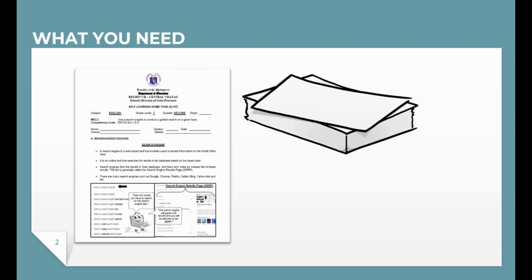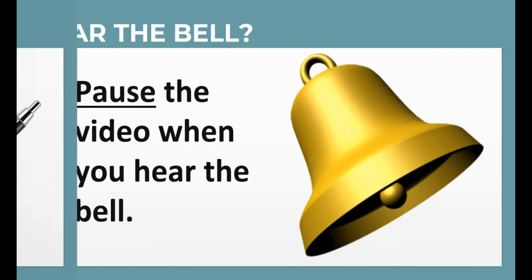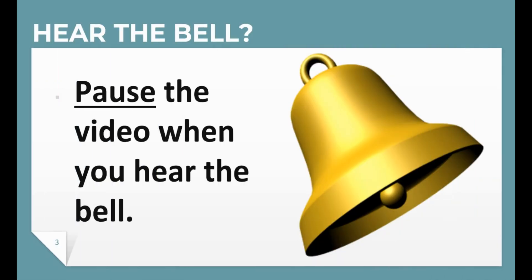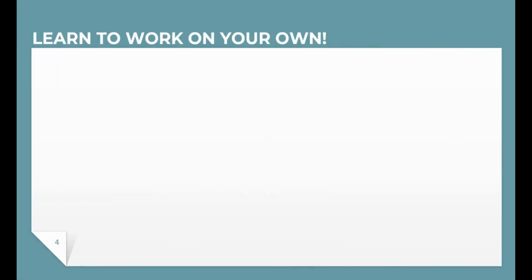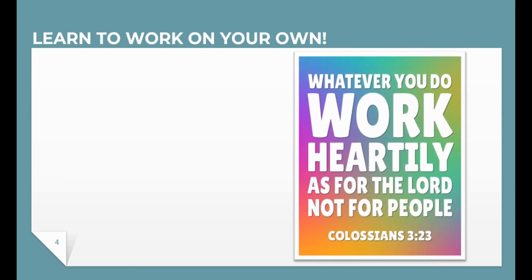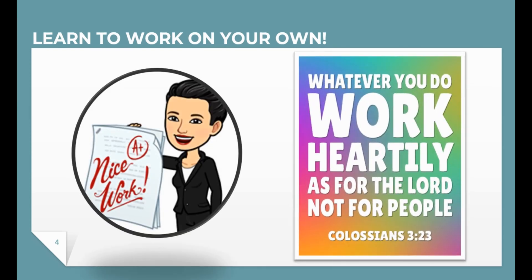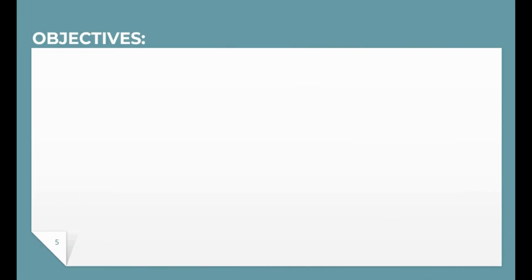For this clip you will need the English 7 home task for week 2, some pieces of bond paper for your outputs, and a pen. Pay attention when you hear the bell sound — that means you may need to pause the video in order to do the task given, then resume the video once you're done. Remember to work on your own; no problem in asking for help from others as long as you did all the work.